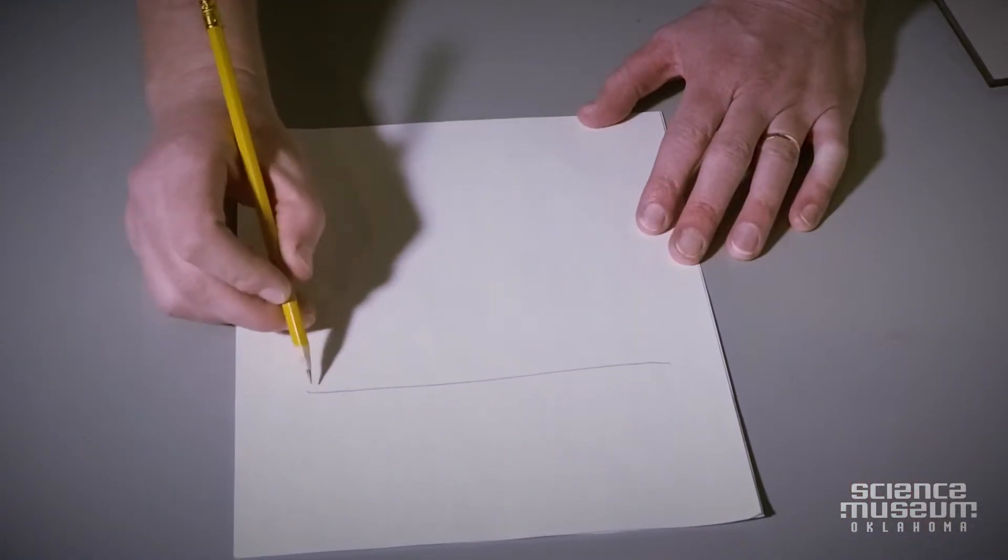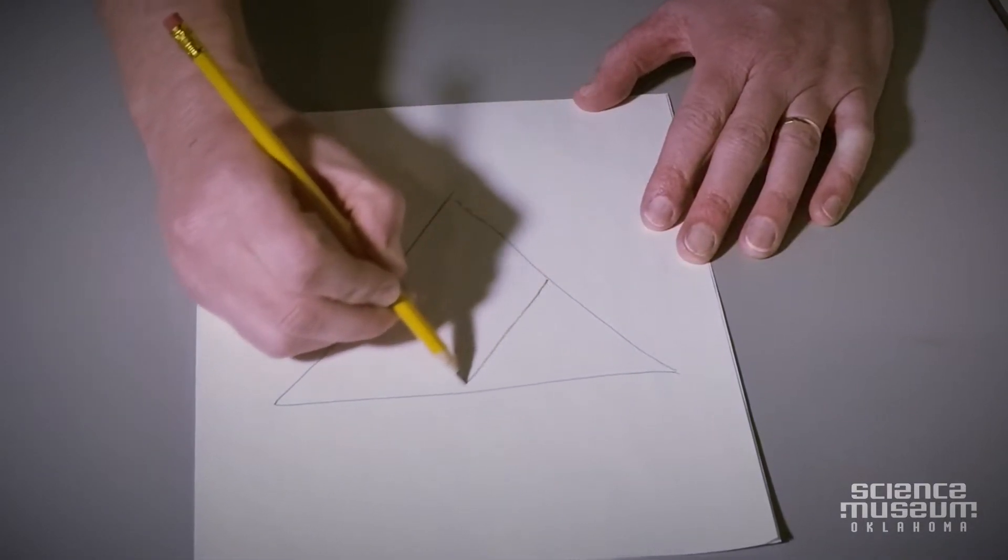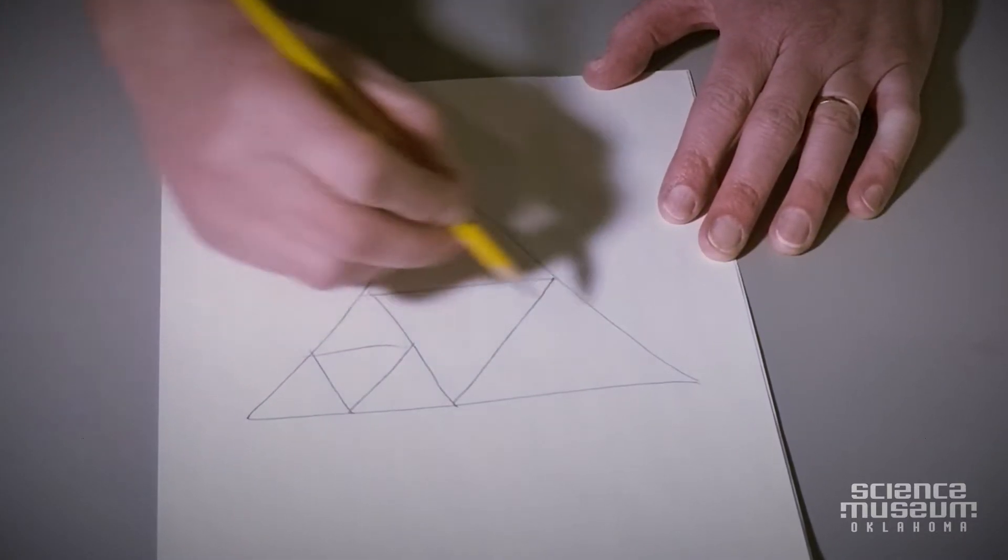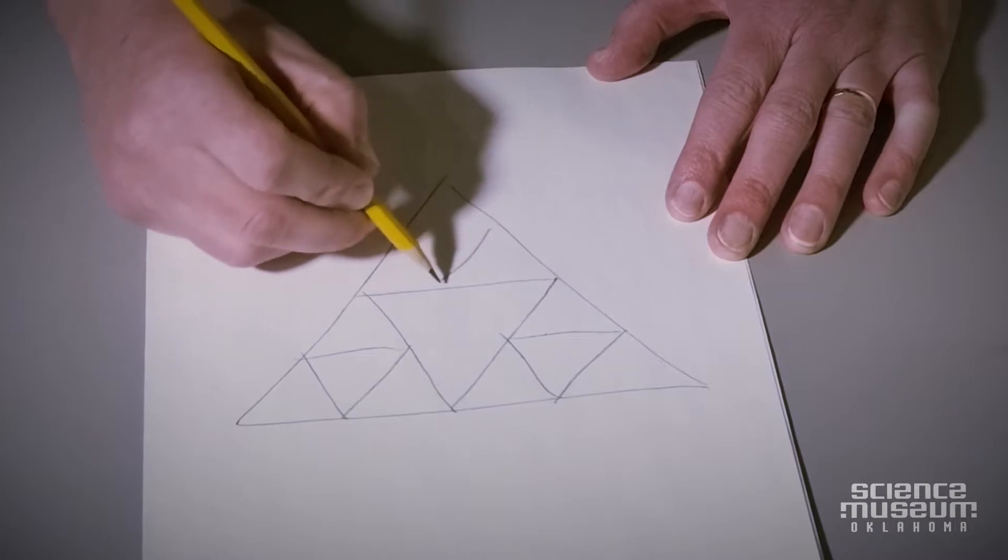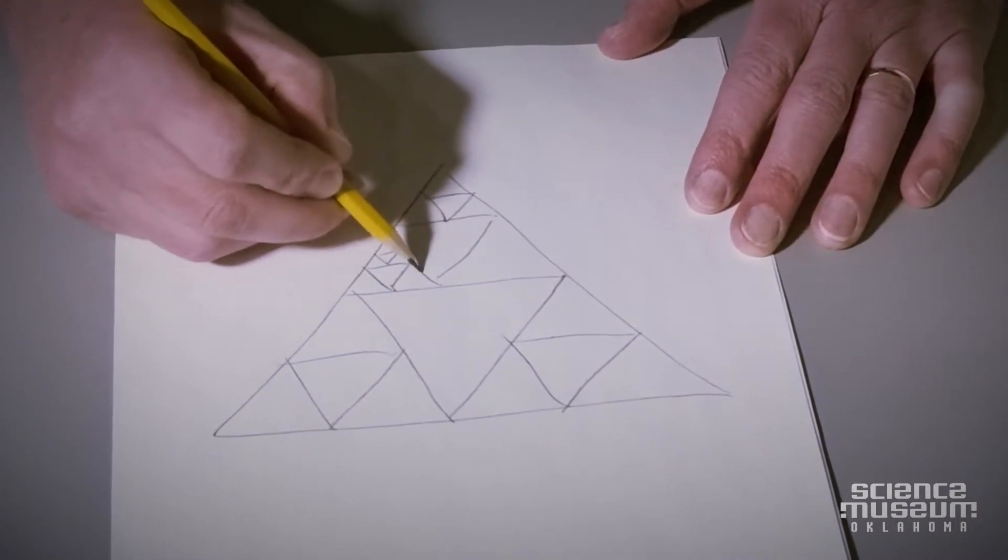Get a pencil and a piece of paper. If you draw a triangle on this piece of paper and then you split this triangle by putting another triangle inside, split these by putting another triangle inside and another triangle inside and keep going until you get smaller and smaller.